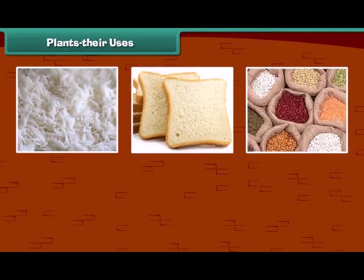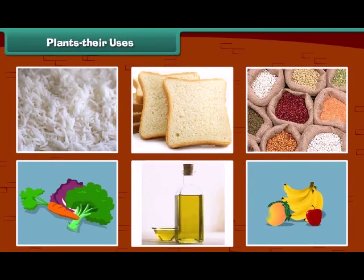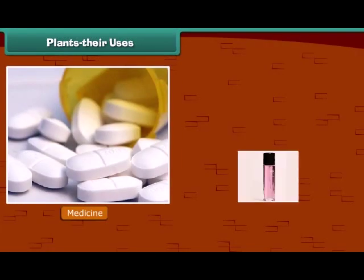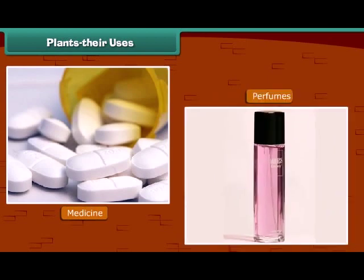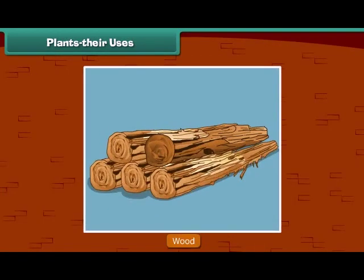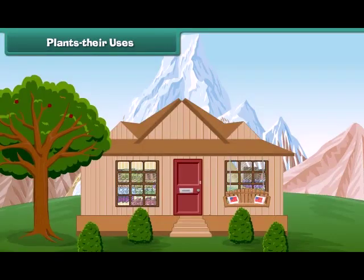Kids, as we know, we get our food items from the plants. Besides food items, we also get many other things from plants. Many medicines and perfumes are made from plants. Plants also give us wood — in some places, houses are made up of wood.